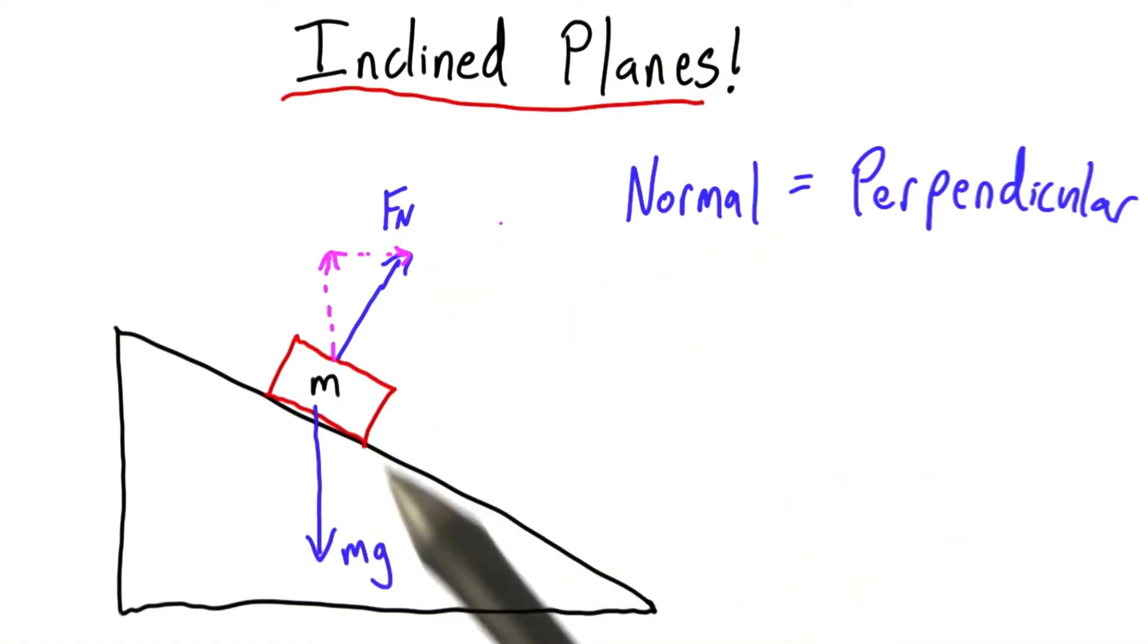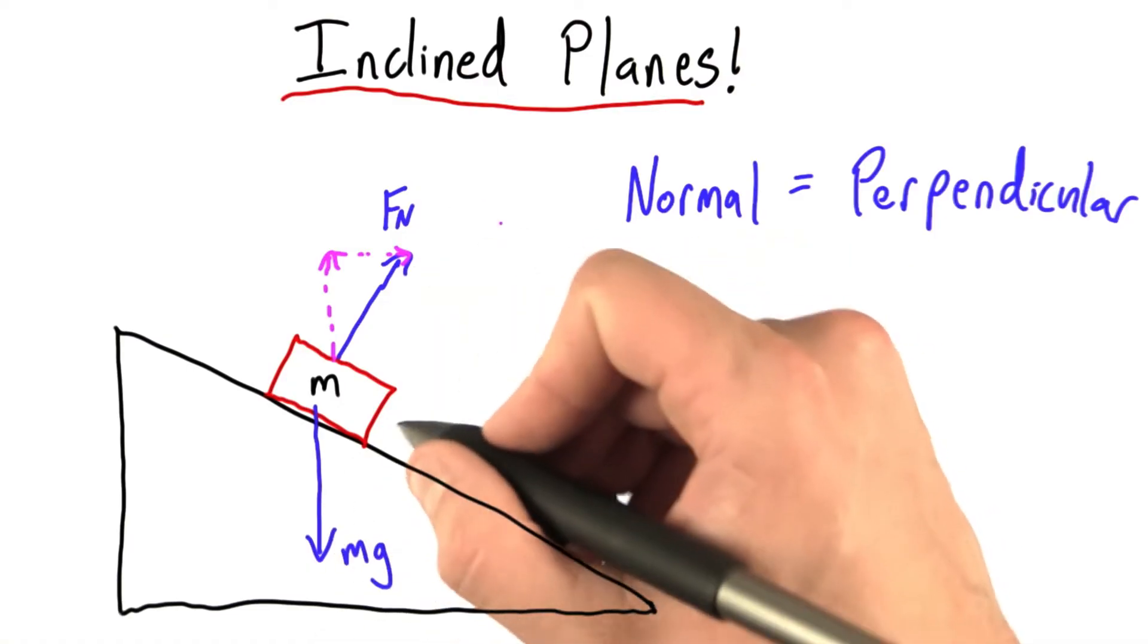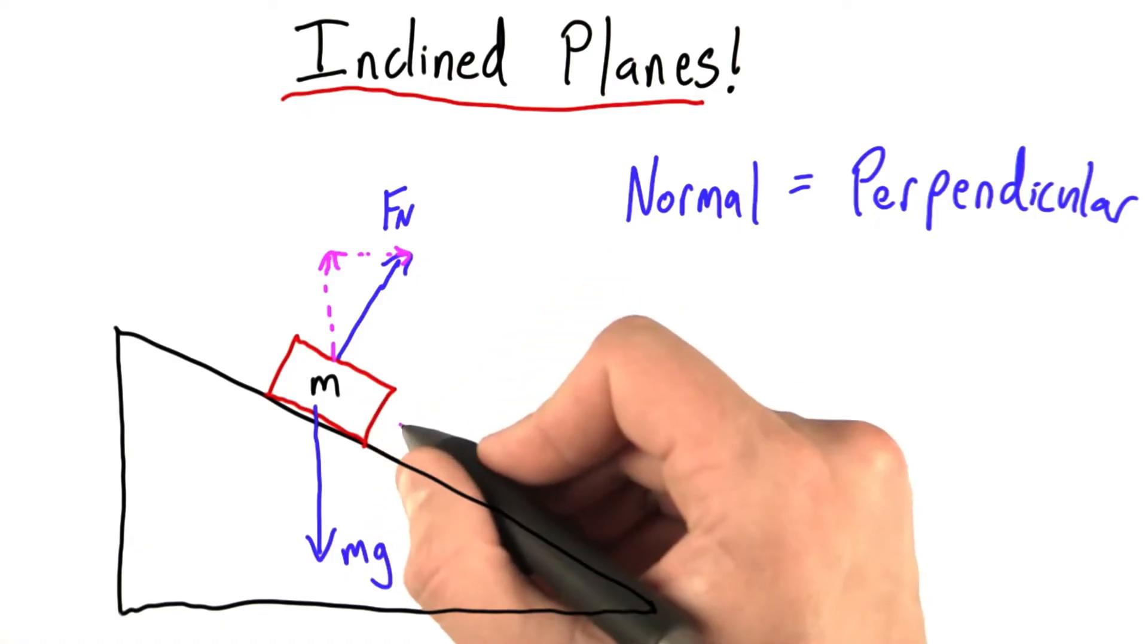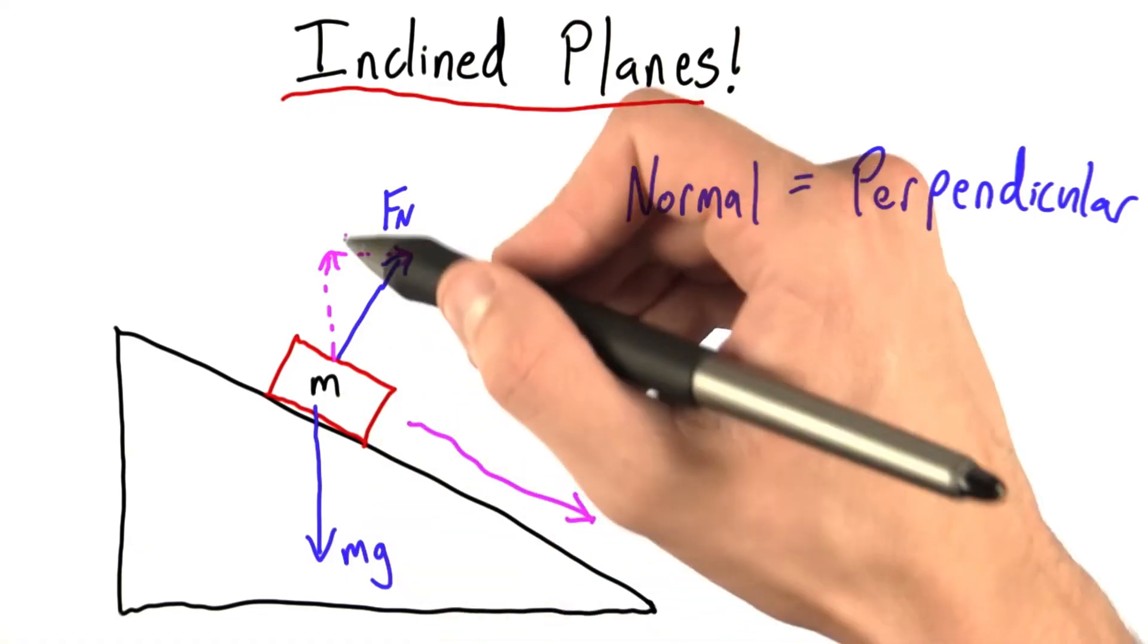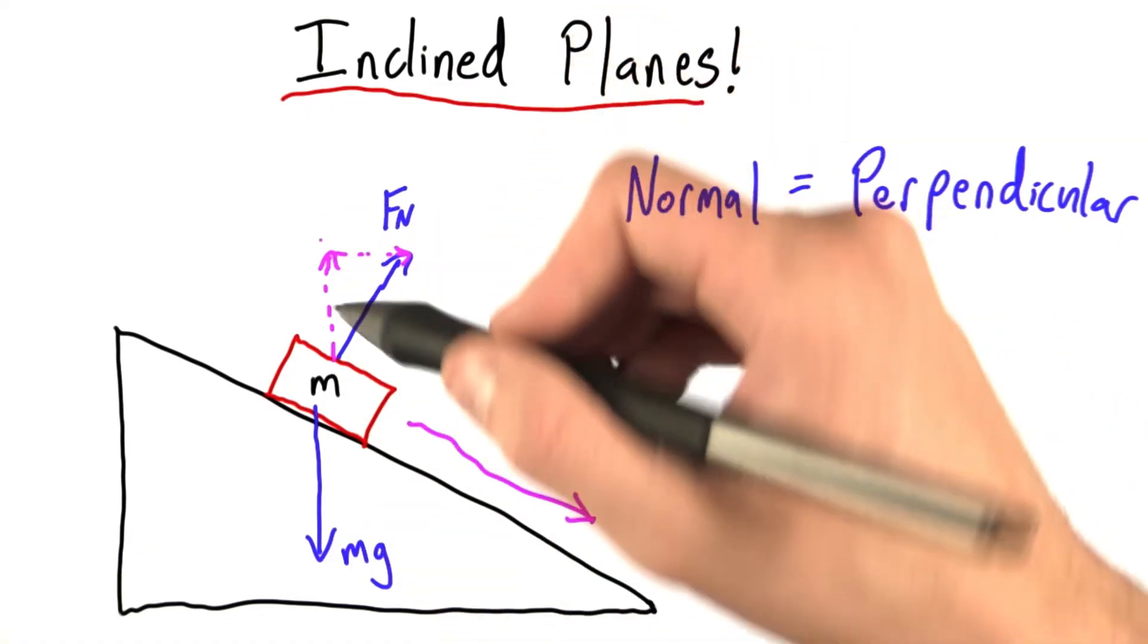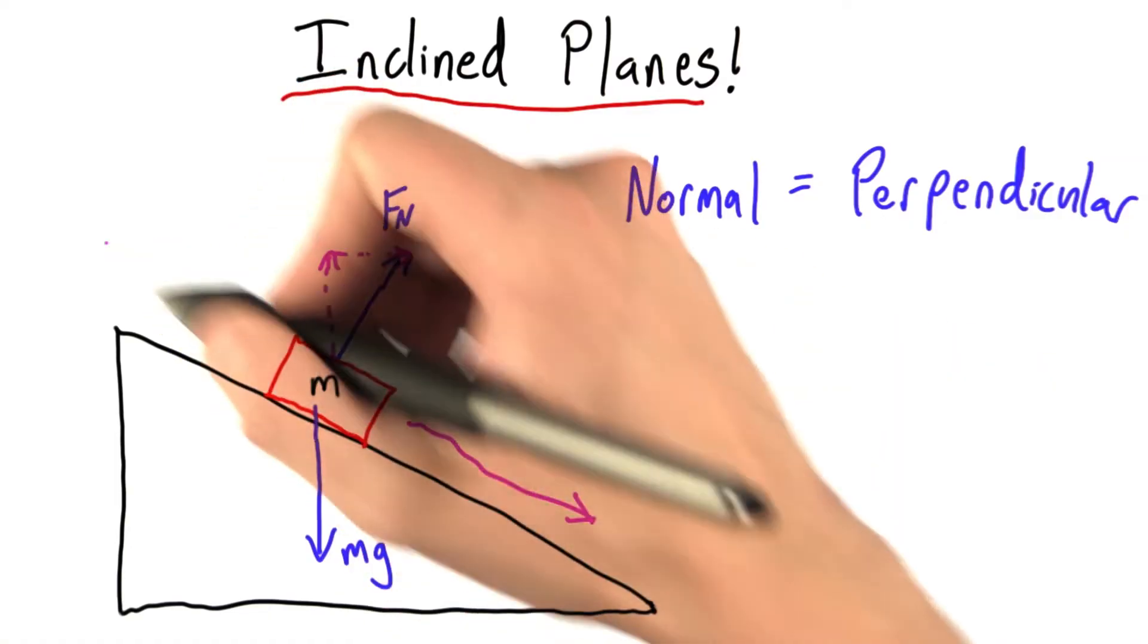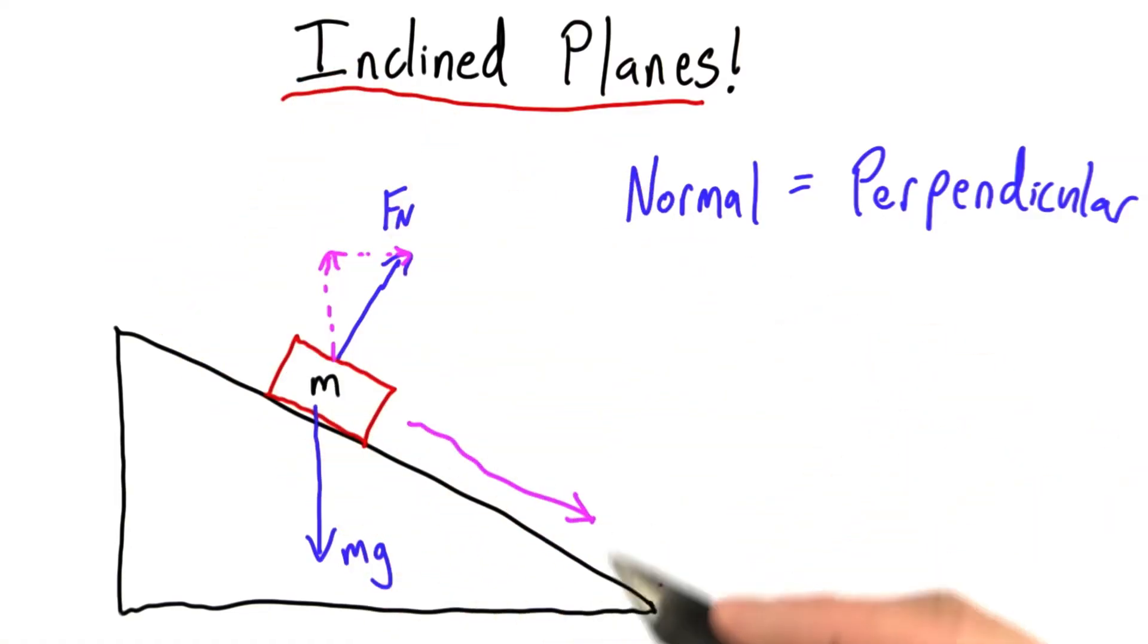It turns out that's not the best way to solve this problem, because we know from experience that this block is going to slide down the ramp. It's not going to slide straight to the right or straight up or straight down. It's going to slide in this direction.